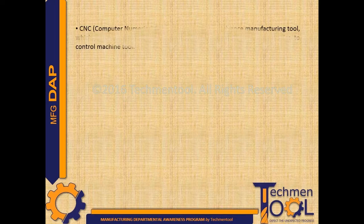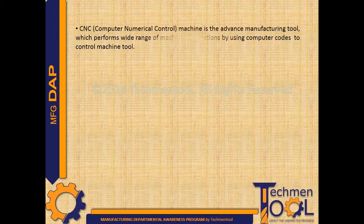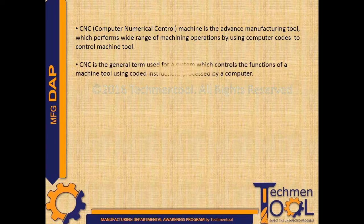What is meant by CNC machine? CNC, Computer Numerical Control, machine is the advanced manufacturing tool which performs a wide range of machining operations by using computer codes to control machine tool. CNC is the general term used for a system which controls the functions of a machine tool using coded instructions processed by a computer.